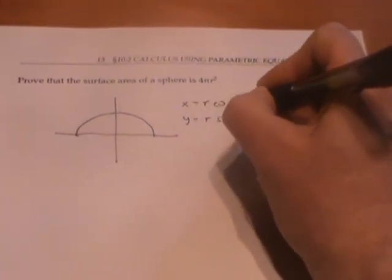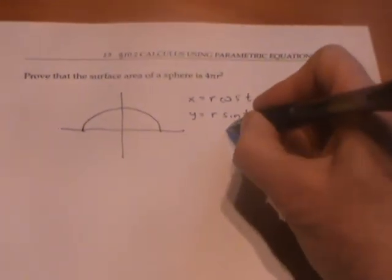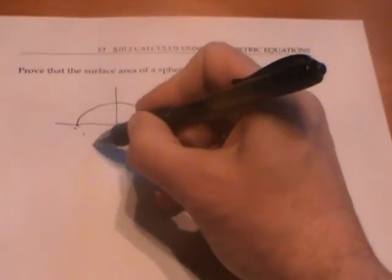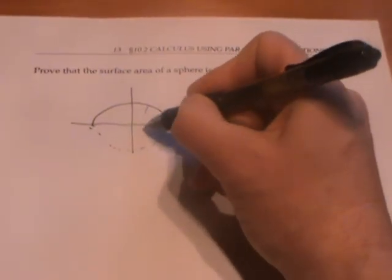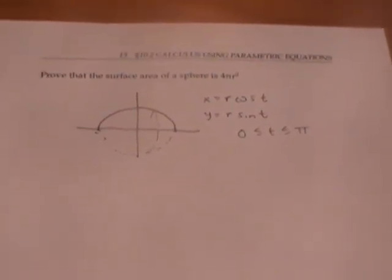I need to put this curve in parametric equations, which can be given by x equals r cos(t) and y equals r sin(t). And my t is going to range from 0 to π. So when I rotate this around the x-axis, I get what's supposed to look like a sphere.